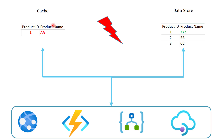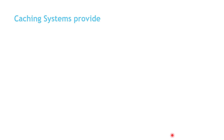Before we get into that, I want to mention that API Management comes with its own internal caching. If you are interested to see how it works and the different caching policies you can use, I'll put a link for that video so you can review it. Now let's talk about the different operations supported by different caching systems: read-through, write-through, and write-behind operations.